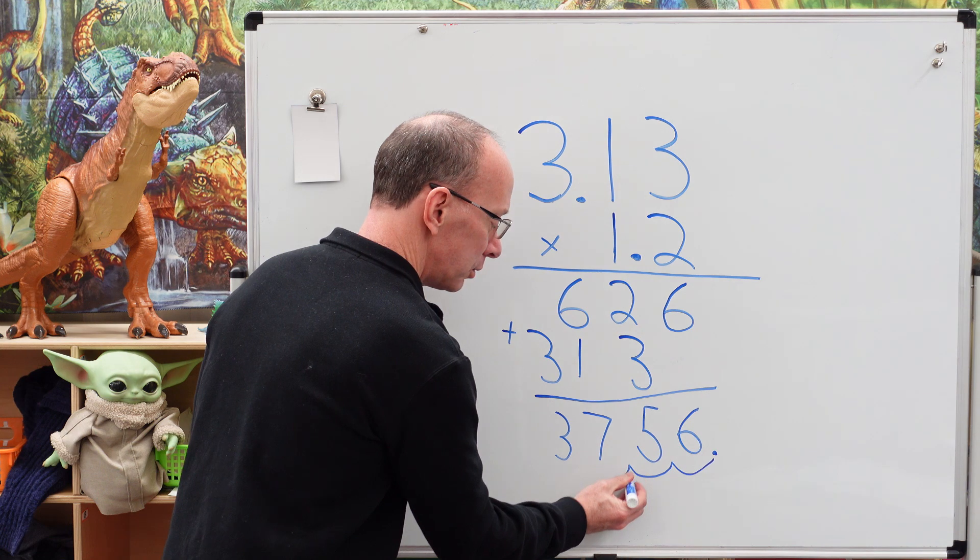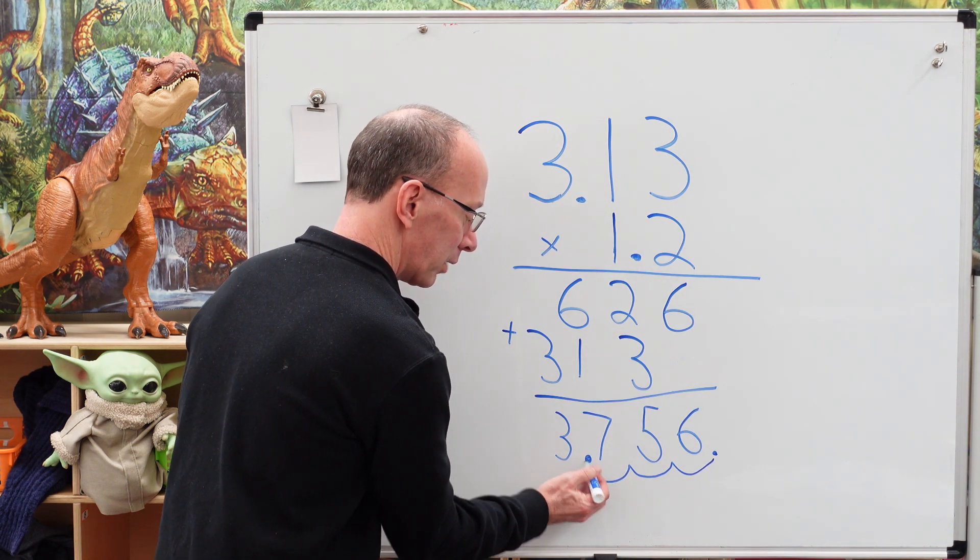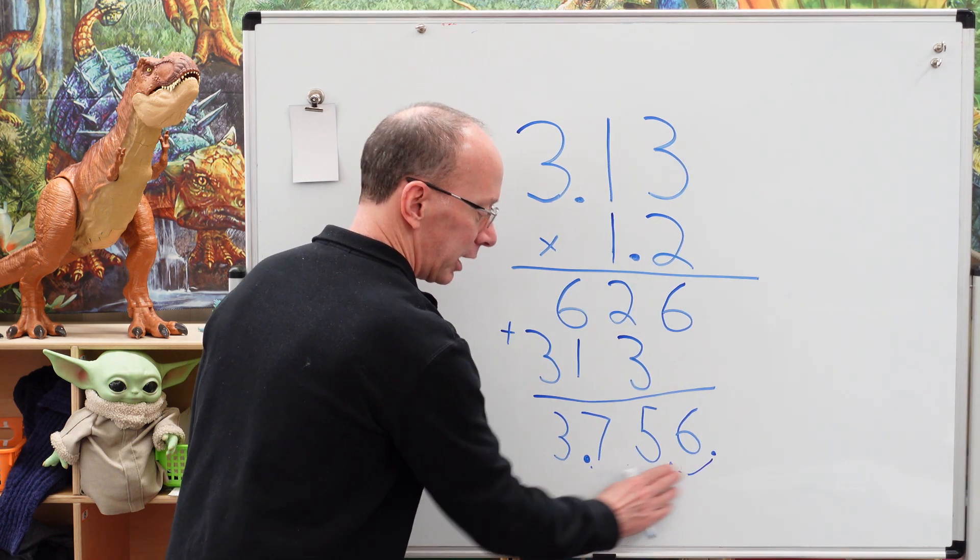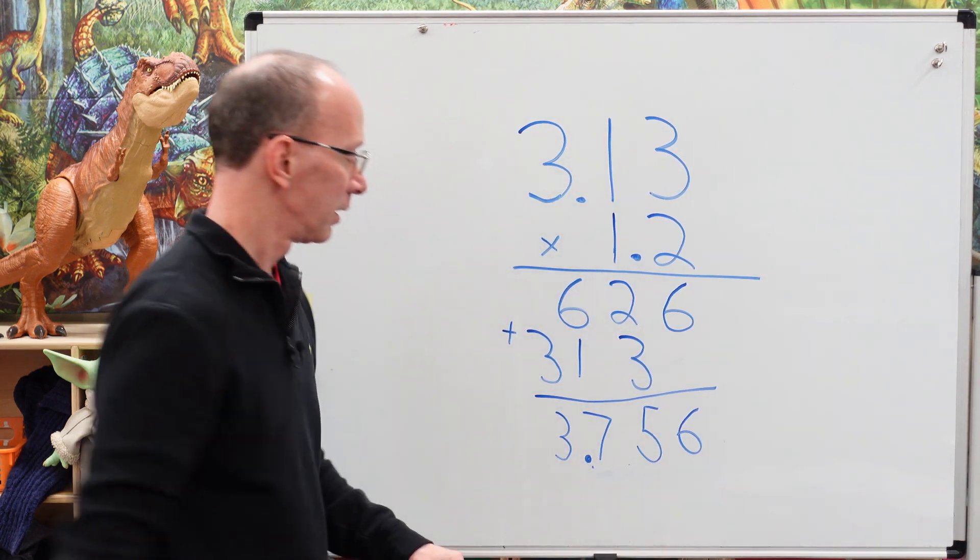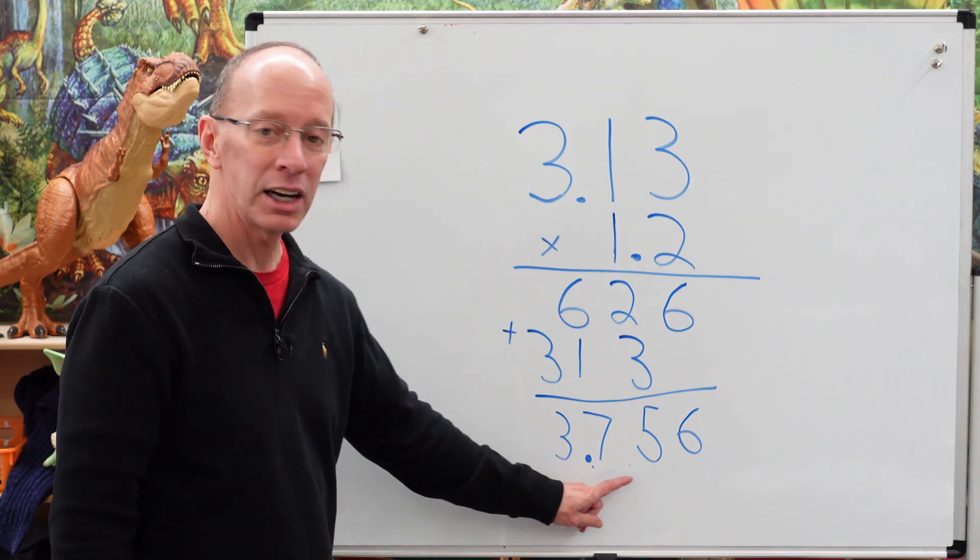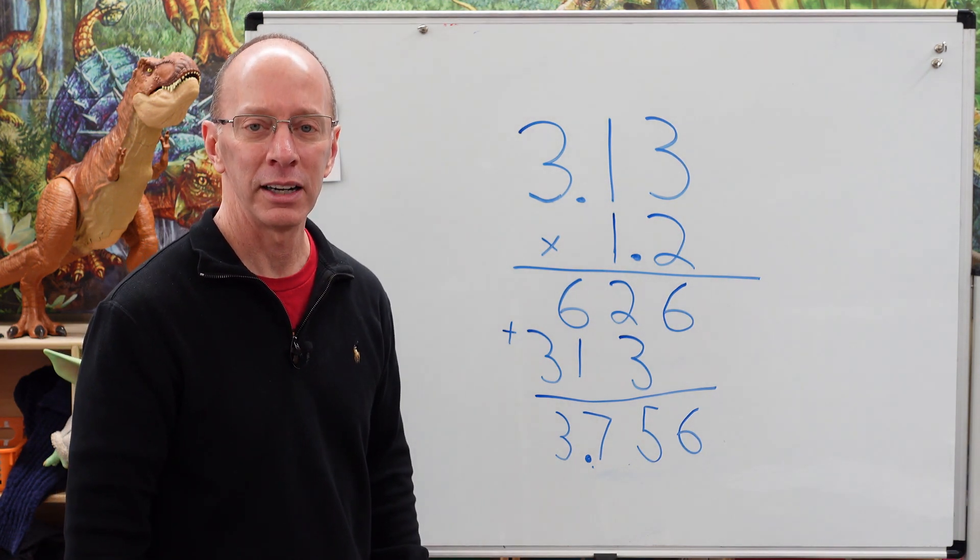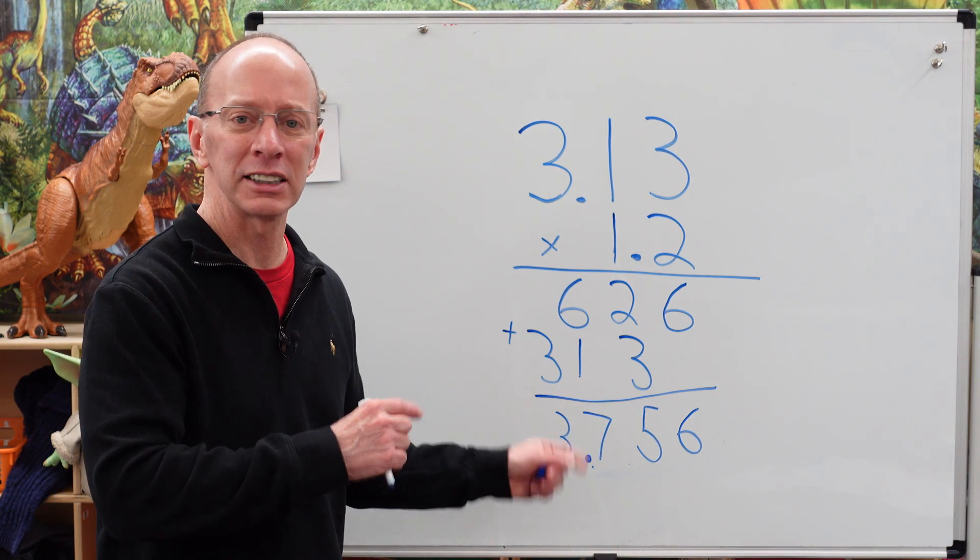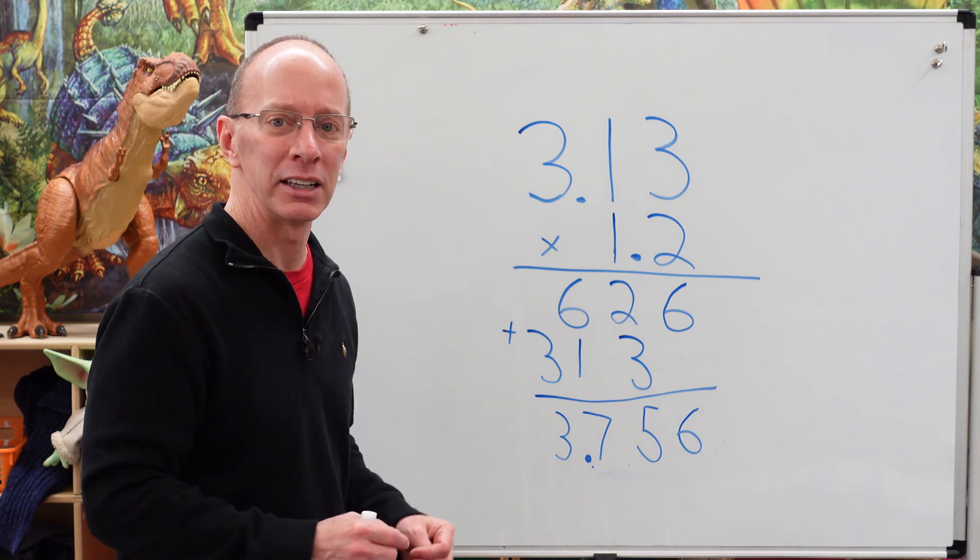So we get to move it over three times. One, two, three. We're going to put it right there. And you can go ahead and move, erase this line right here. And there's our answer. 3.756. All right. Ready to do another one. The more practice, the better you get again. So let's go ahead and begin another one.